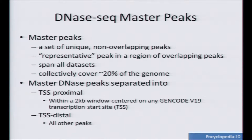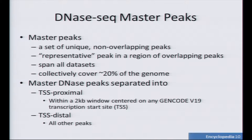From these master peaks, we have a few advantages. We get a set of unique, non-overlapping peaks — a representative peak for each area — and that peak we annotate with all the cell types that are involved in that region. These peaks can span all the datasets, and when you merge them all together they cover about 20% of the genome. From this set of master peaks, we can then divide these up into transcription start site proximal and transcription start site distal peaks. The TSS proximal peaks are within 2KB of the GENCODE TSS annotation.